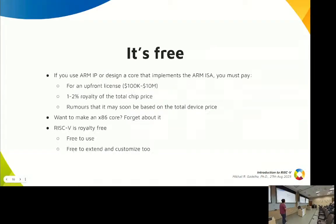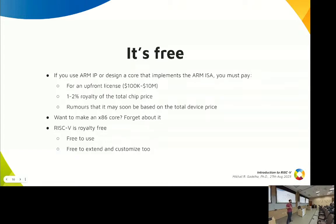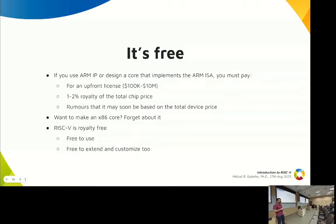What makes RISC-V so special? First of all, it's free. If you want to design an ARM IP, you have to pay an upfront license of around $10K to $10 million, plus one to two percent on the total chip price. There are rumors they're going to change the license to be based on device price — it's very expensive. And if you want to design an x86 core, forget about it — Intel is the sole owner of that IP. On the other hand, RISC-V is free. You're free to use it, extend and customize it however you want.